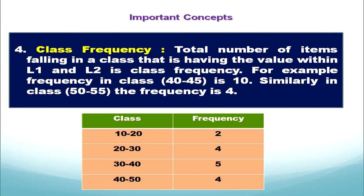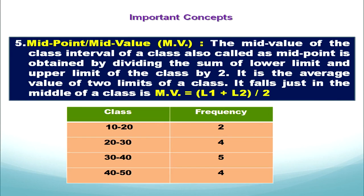The next concept is midpoint, often known as mid value. The mid value of a class interval is also called the midpoint. To calculate it, we add the lower limit and the upper limit, then divide that sum by 2 since we have two limits.